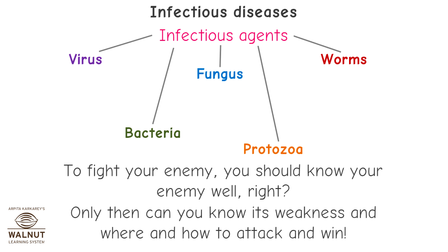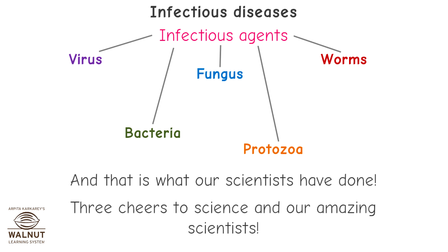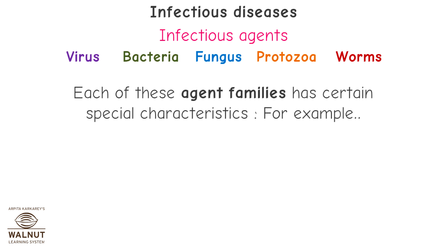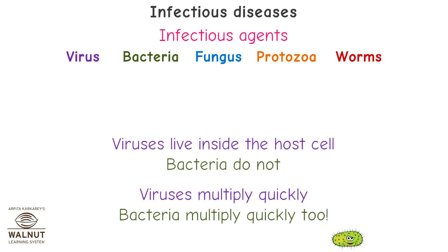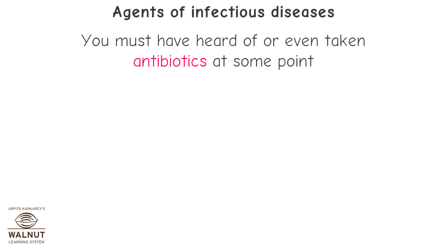To fight your enemy, you should know your enemy well — only then can you know its weakness and where and how to attack and win. That is what our scientists have done. Each of these agent families has certain special characteristics. For example, viruses live inside the host cell while bacteria do not. Both viruses and bacteria multiply quickly, and that is why diseases caused by different agents have to be treated differently.